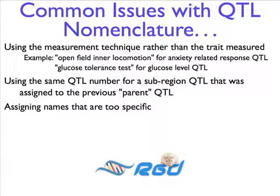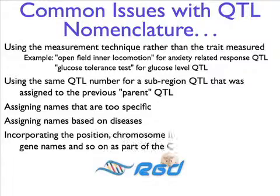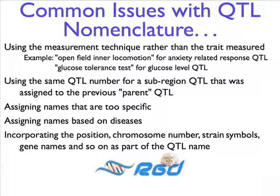Sometimes, names are too specific. Many are based on diseases, or they incorporate the position, chromosome number, strain symbols, gene names, and so on as part of the QTL name. RGD is in the process of developing a trait ontology, which will address some of these issues by standardizing the designations for the traits upon which QTL names are based.